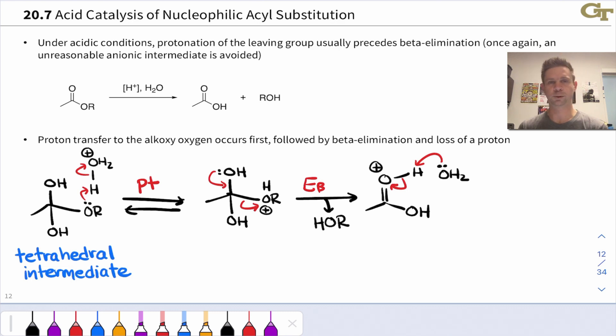All that needs to happen now is proton transfer back to the conjugate base of the catalyst. Here I'm just using water, assuming we're in aqueous solution, and this gives the neutral carboxylic acid product. So notice the mechanistic pattern here, proton went on, beta elimination occurred, and then the proton came off in the last elementary step.